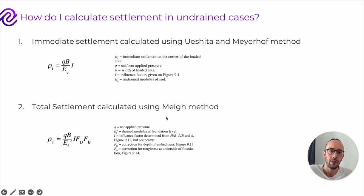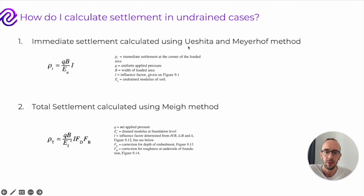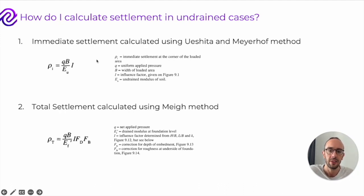Settlement can be calculated in different ways. You generally split it into undrained analysis and drained analysis. Undrained analysis is for things like clays and silts — materials which don't release water straight away. Immediate settlement can be calculated using the Janbu-Bjerrum-Kjaernsli or Meyerhof method if you want to use closed-form calculations. You can pause the video here to read about the different parameters used.